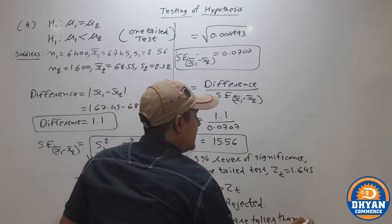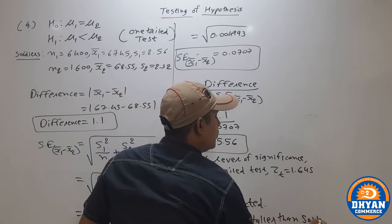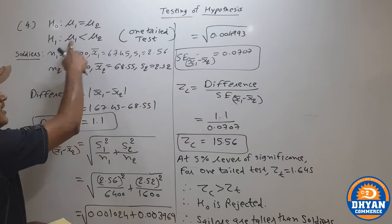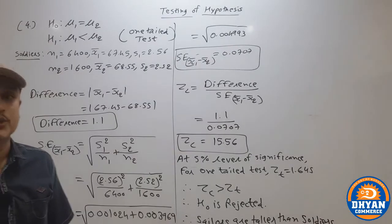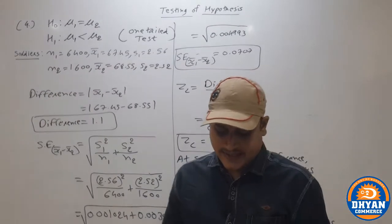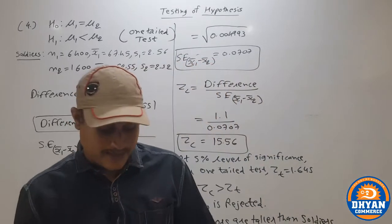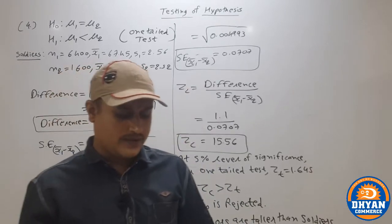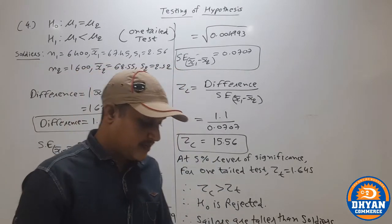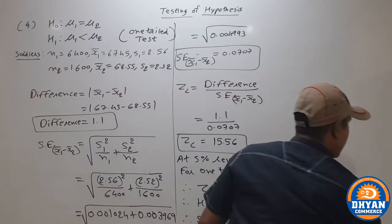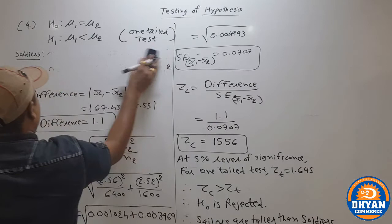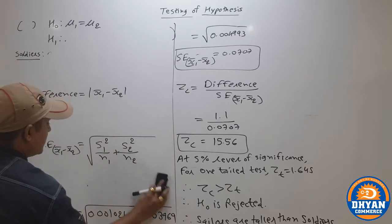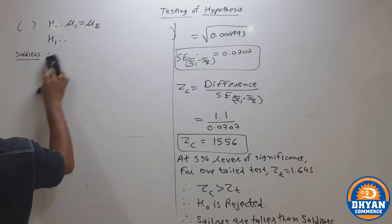Special attention is needed for interpretation — understand it clearly before writing. Soldiers' height is less, sailors' height is more — so we write: sailors are taller than soldiers. This was a one-tailed test, question number 4. A similar sum with men and women will be given as homework (sum number 6). Now we move to sum number 3, where something new is given: sigma 1 and sigma 2.